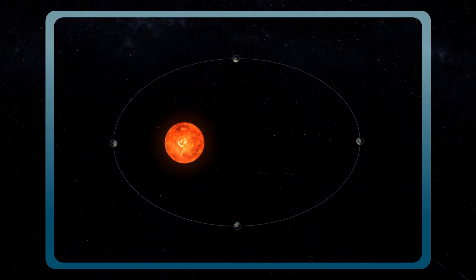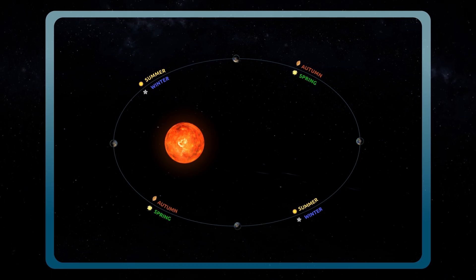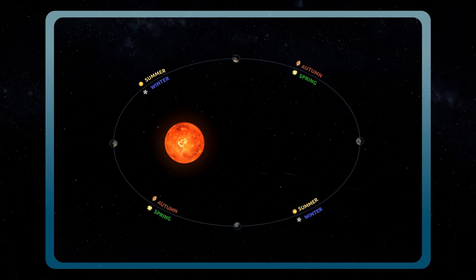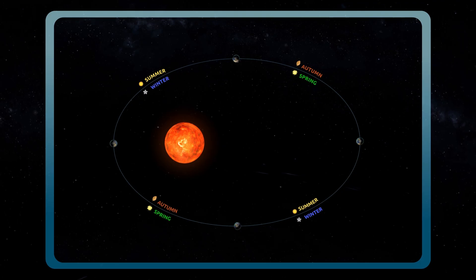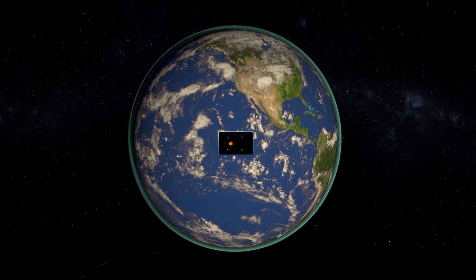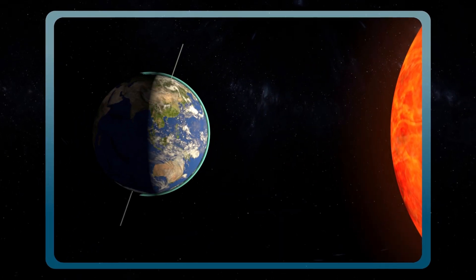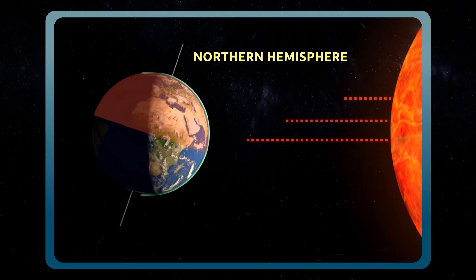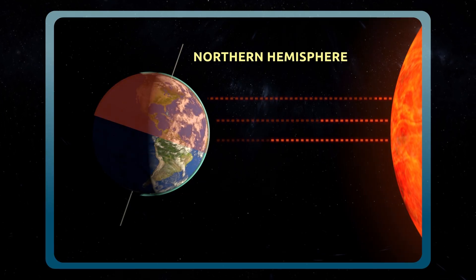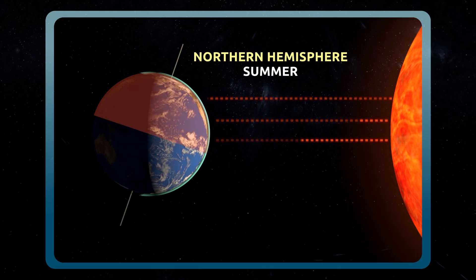Thanks to revolution and the inclination of the rotation axis of the Earth, we have four seasons: spring, summer, autumn, and winter. The more the hemisphere is inclined towards the Sun, the more directly the sunlight reaches the Earth's surface. It's warmer and that's why it's summertime.